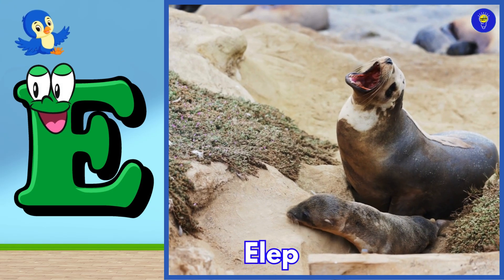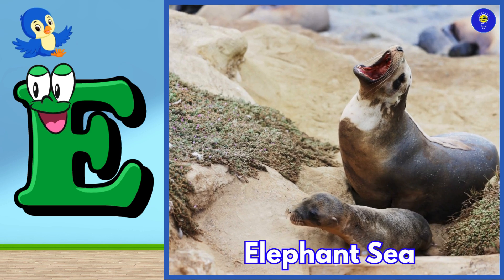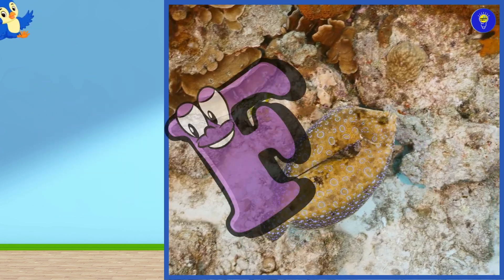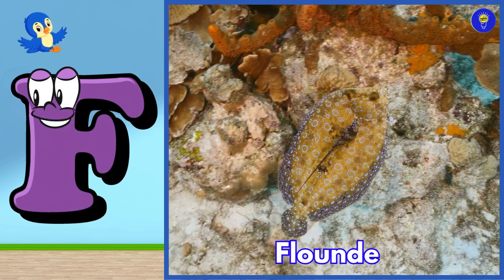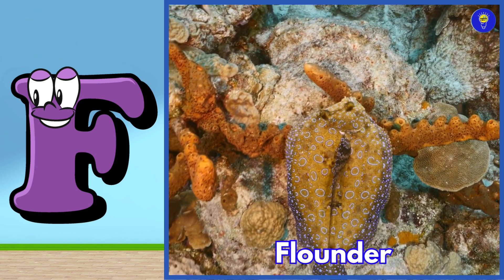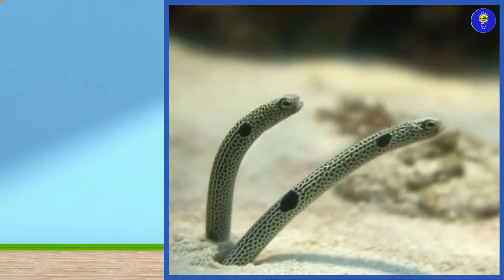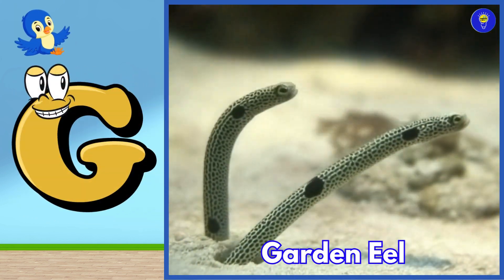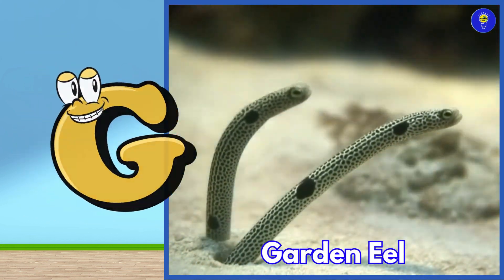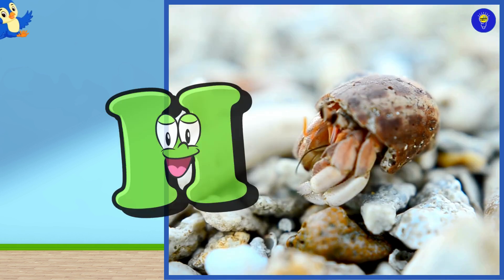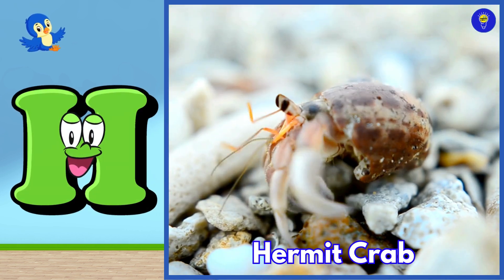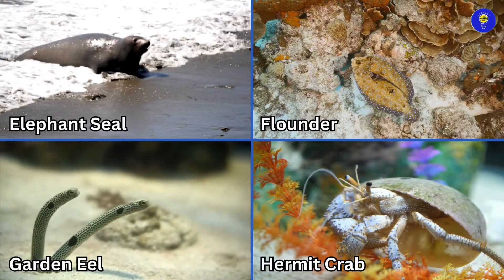E is for elephant seal. Eh, elephant seal. F is for flounder. Fuh, flounder. G is for garden eel. Guh, garden eel. H is for hermit crab. Ha, hermit crab.